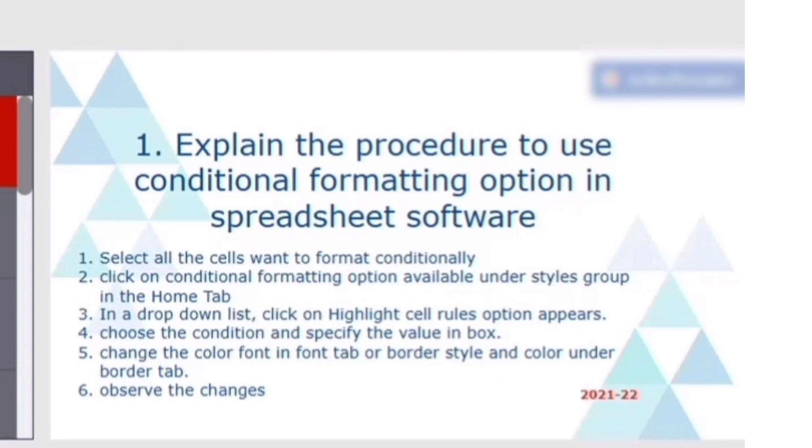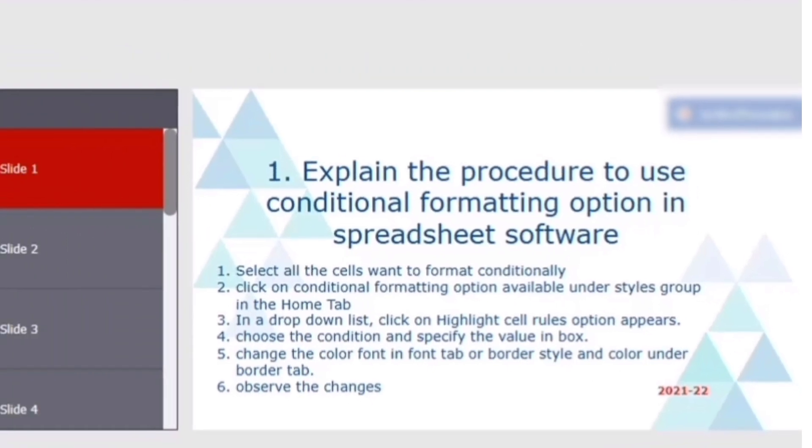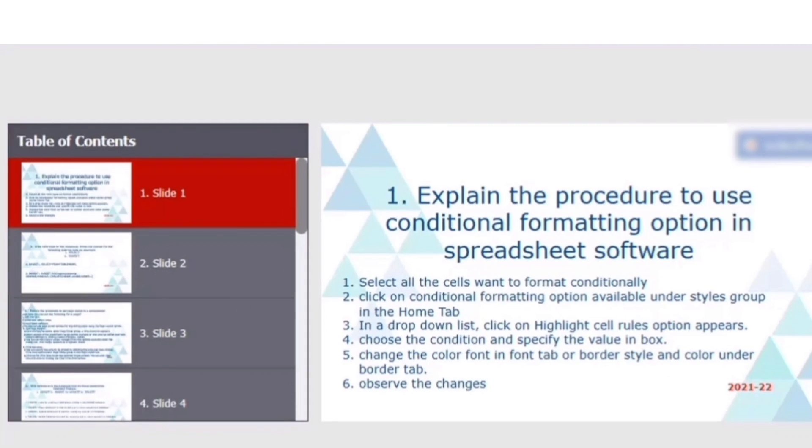The next step is in a drop down list, click on highlight cell rules option appears, choose the condition and specify the value in a box. Change the color font in a font tab or border style and color under the border tab. Observe the changes. This question was asked in 2021 and 2022 question paper.